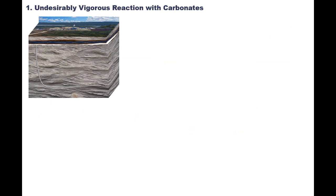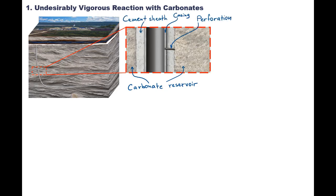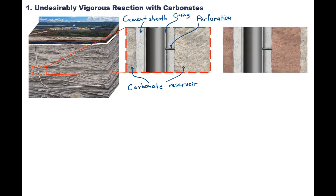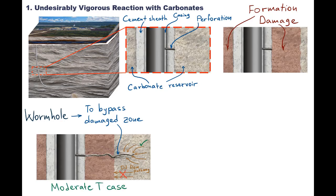First, since HCl is a strong acid, we must understand the nature of its reaction with carbonates. Here we can see a carbonate reservoir. A vertical portion of the well is cased, cemented, perforated, and ready to produce oil. However, we have some damage in the near wellbore zone. Normally, our goal is to create a wormhole and bypass the damaged zone. This would allow oil flow through this channel instead of the low permeability damaged zone.